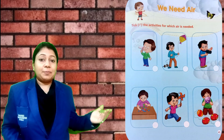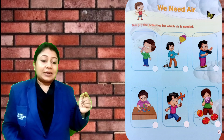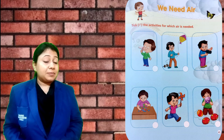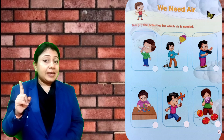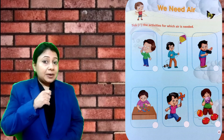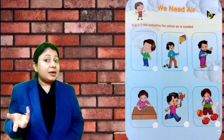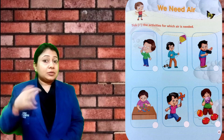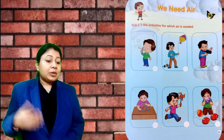Now move to next page. We need air. The activity says: tick the activities for which air is needed. There are some activities here. First picture — the child is making bubbles. Bubbles need air. Without air, bubbles can't flow in the sky. Next — kite. Kite also needs air.